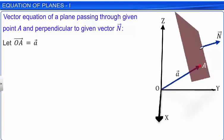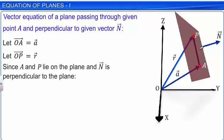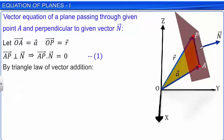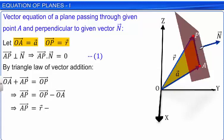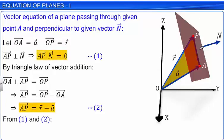Let vector a be the position vector of point A, as shown. Consider another point P with position vector r on the plane, as shown. Since points A and P lie on the plane and vector n is perpendicular to the plane, vector AP is perpendicular to vector n. This implies that the dot product of vector AP and vector n is equal to 0. Let this be equation 1. Applying the triangle law of vector addition to triangle OAP and rearranging, we get the value of vector AP as shown in equation 2. Substituting the value of vector AP from equation 2 in equation 1, we get the vector equation of a plane passing through a given point and perpendicular to a given vector n.